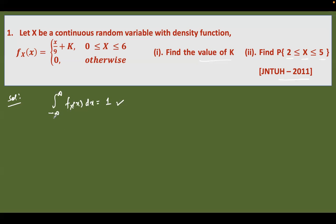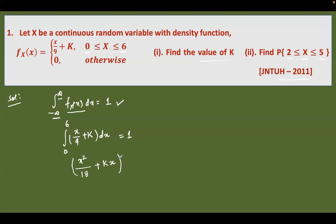The limits minus infinity to infinity are for the probability density function. As per the given question, substituting: the integral of (x/9 + k) dx with limits 0 to 6 equals 1. Evaluating this, it becomes x²/18 + kx with limits from 0 to 6, which equals 1.